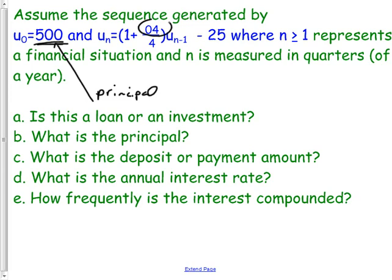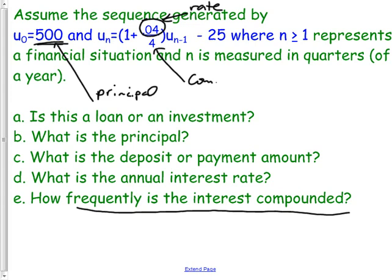This little part right here, the 0.04, anybody want to take a guess what that is in this scenario? It's the rate, yes. We usually call it an interest rate, but it's the growth rate. This little part right here, that's how many times per year it is compounded or added to. It's the number of times per year that you mess with it. The official name for that is the compounding frequency. How frequently is the interest compounded?